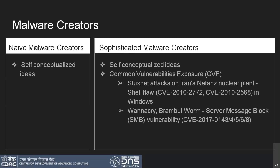The CVE list on cve.mitre.org lists all known vulnerabilities. Any vulnerability can be checked there. MITRE does this for social good — so that people understand vulnerabilities and try to fix them. However, sophisticated malware creators pick vulnerabilities from that list and create specific malware to exploit them.